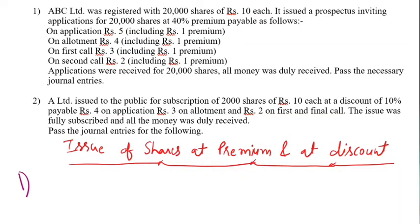Dear students, today we will do a question on issue of shares at premium and issue of shares at discount. When shares are issued at premium, it means when our share price is rupees 10 and we issue it at a higher price than rupees 10. When issued at less than rupees 10, it is known as issued at discount price. In the second example we will take discount, and in the first example we will take issued at premium.